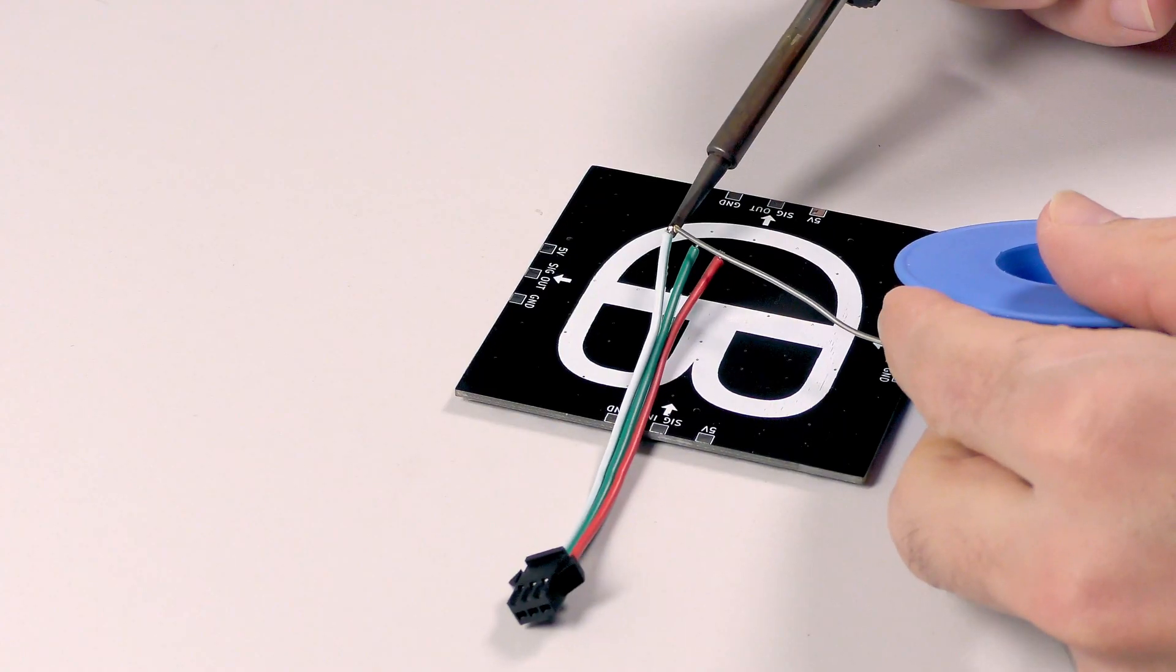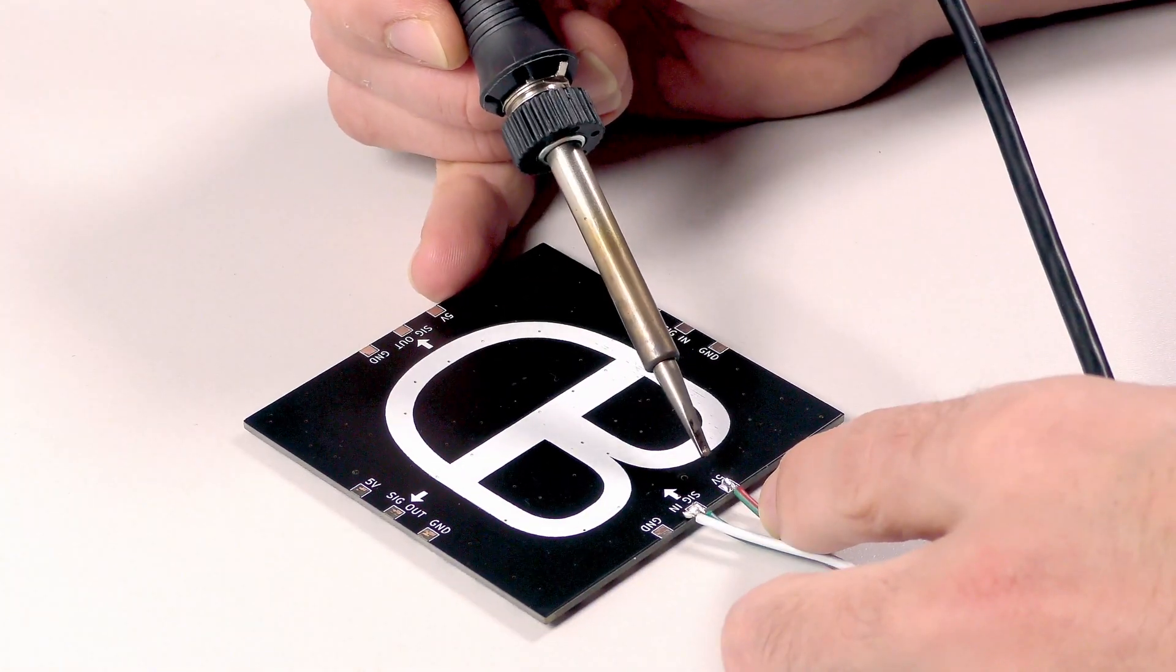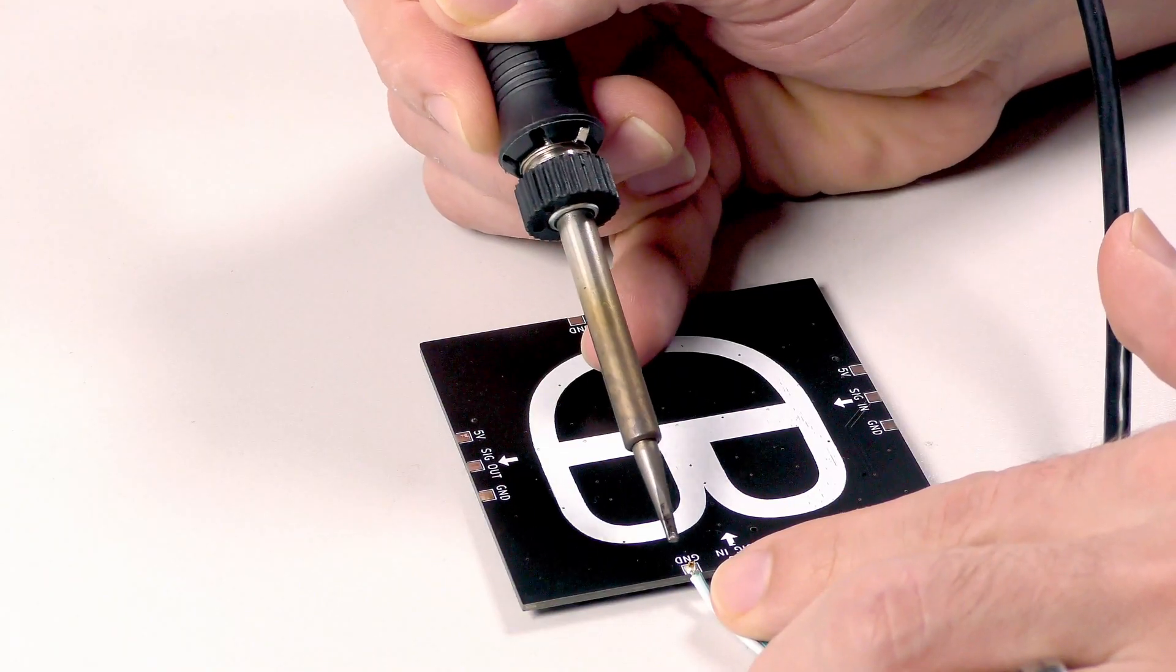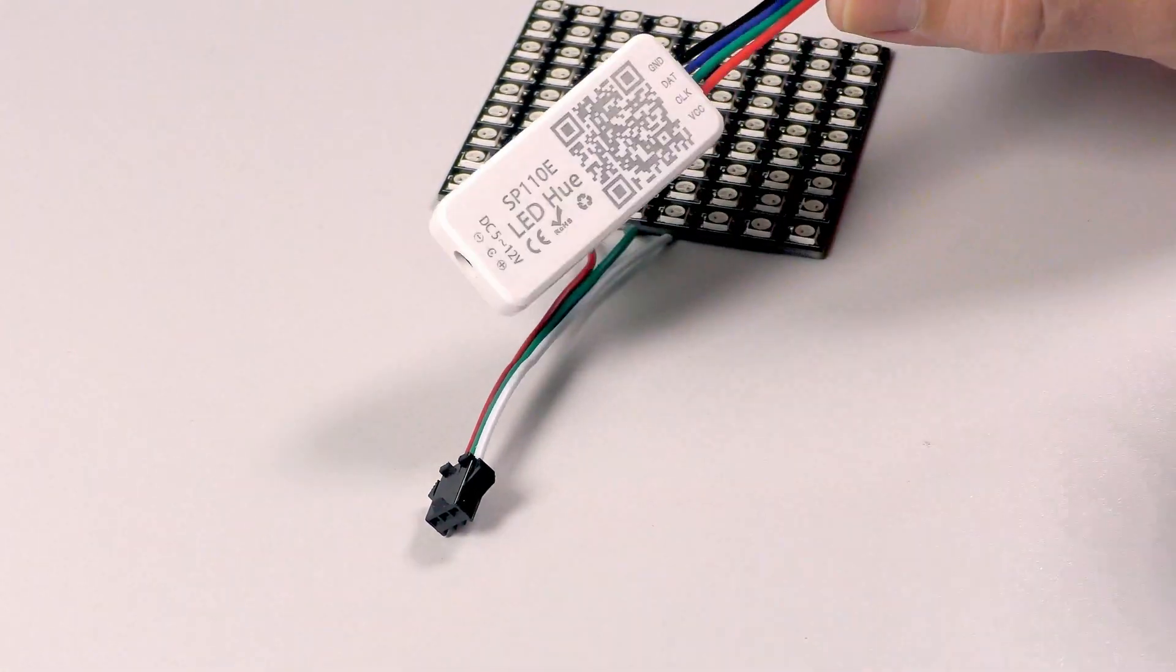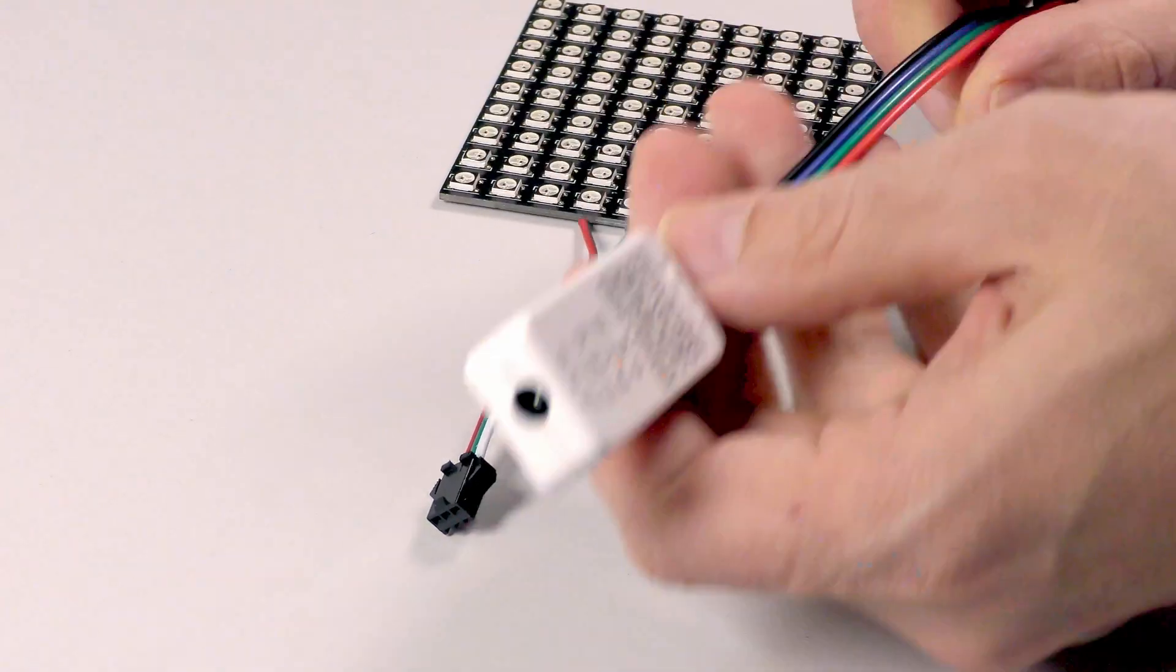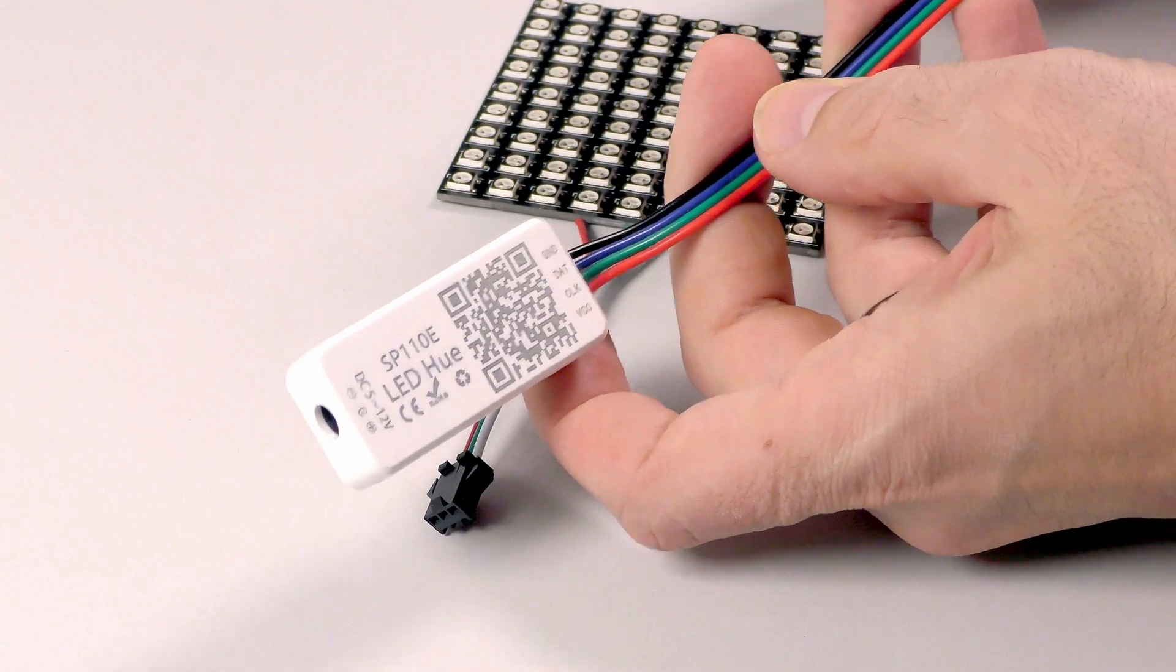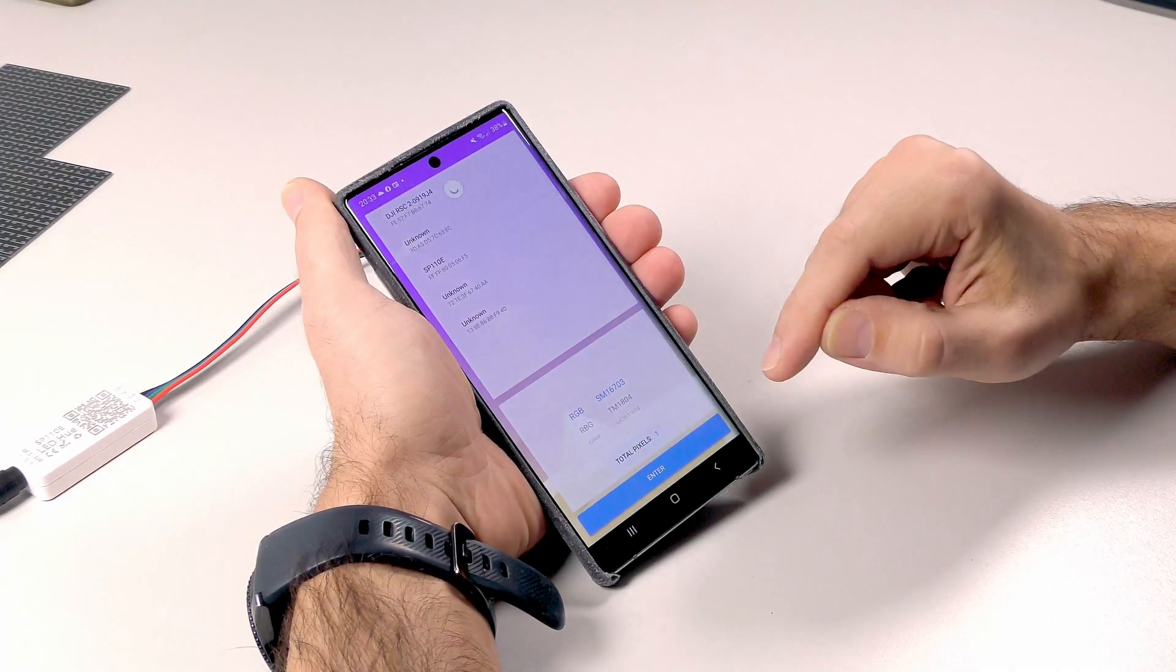Let's solder some cables to test the board. We need a controller so I will plug this into 5V and then I will be able to control via Bluetooth the board. And now we have to connect to it.